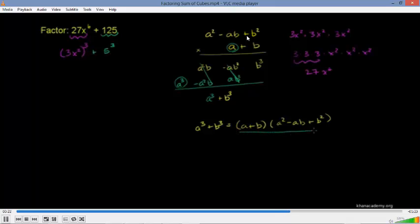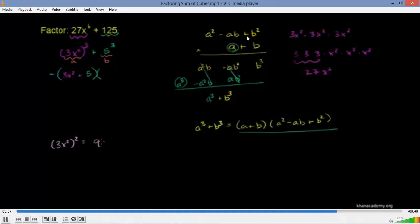Now we know we have the sum of cubes pattern, so we can factor it. Our a is 3x squared and our b is 5. So it factors as a plus b times a squared minus ab plus b squared: that's 3x squared plus 5, times 9x to the fourth minus 15x squared plus 25. For real numbers, this expression can't be factored further, so we are done.